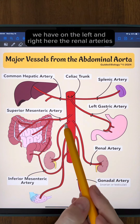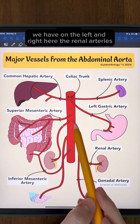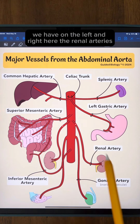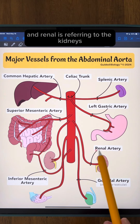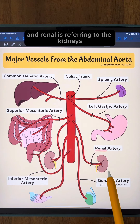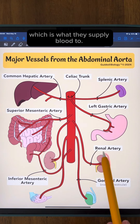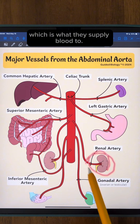Moving down from that, we have on the left and right the renal arteries. Renal refers to the kidneys, which is what they supply blood to.